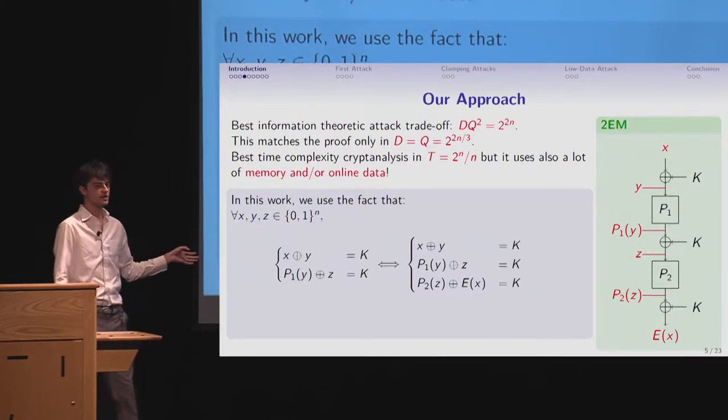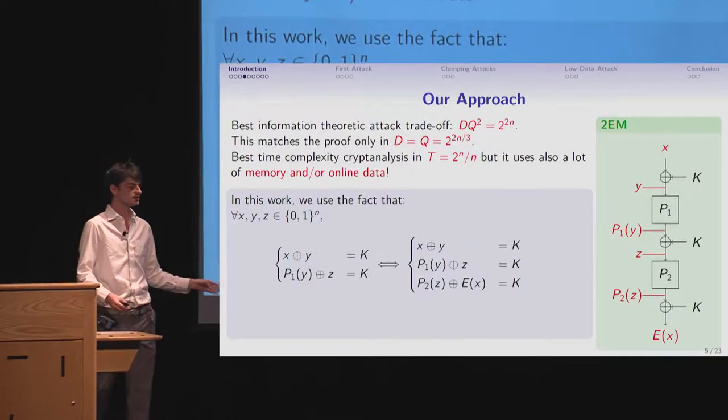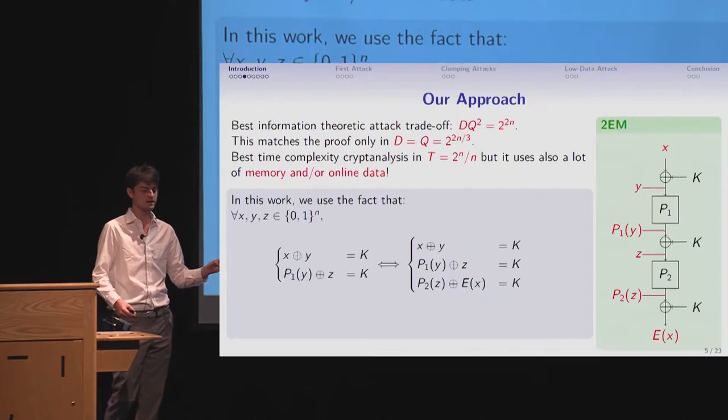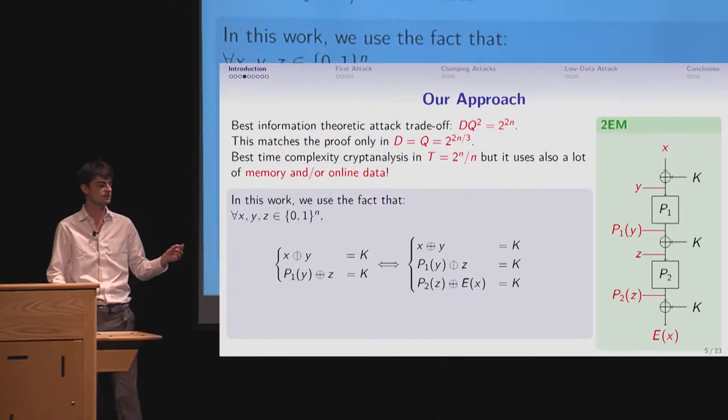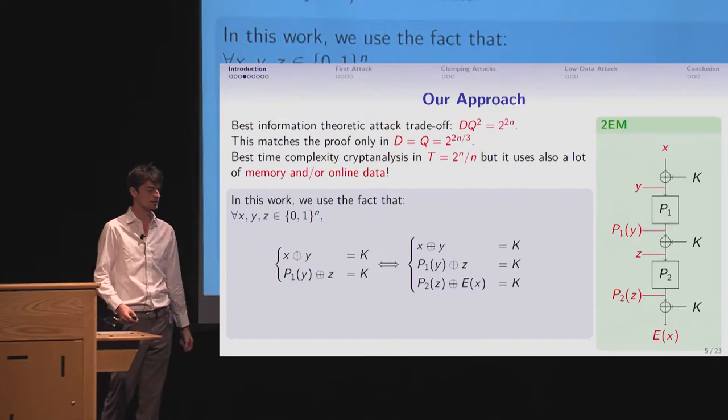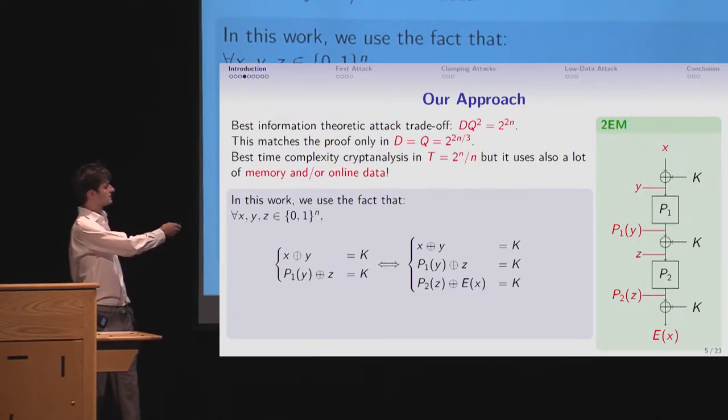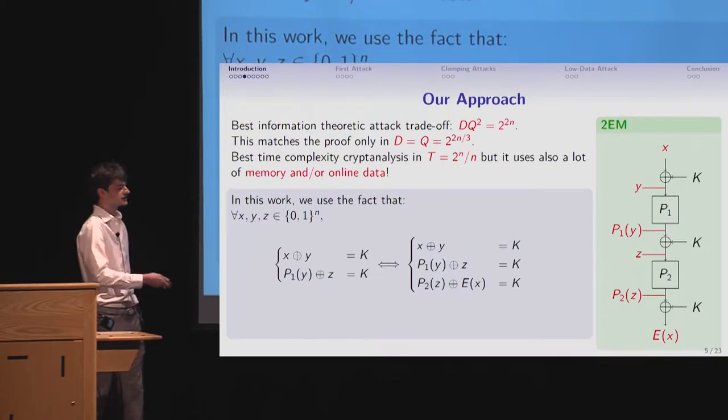Just I name z and P2 of z, the input output of the second permutation. And now, same reasoning as before, I say for any triples, x, y, z. If I have a difference of K between x and y, and also a difference of K between P1 of y and z, then by construction, I have the third one for free. I mean, the P2 of z and E of x will differ by key.